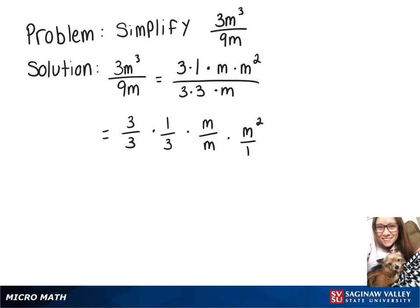So now, 3 over 3 and m over m are going to simplify to 1, so we can cross those off, and then what we're left with is 1 times m squared, which is just m squared, over 3 times 1, which is just 3.